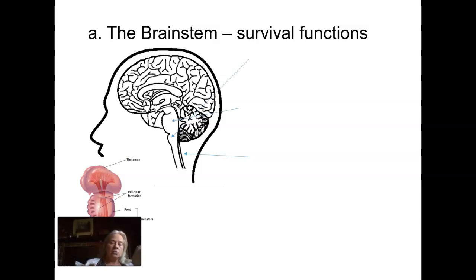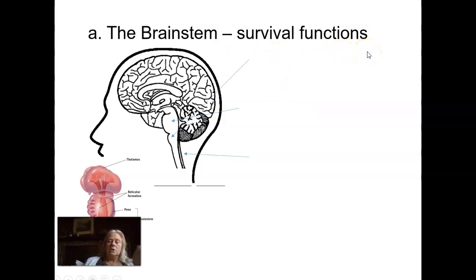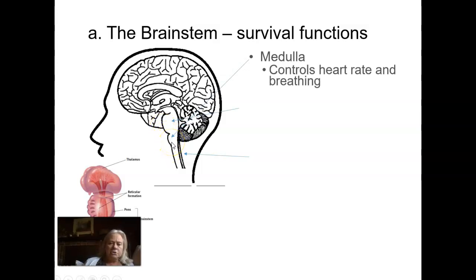I recommend going to your diagrams and finding the one that shows the brain stem, as we label and describe its parts. The brain stem itself is the stalk on which the larger part of the brain sits, and its primary function is survival. The first structure, the medulla, is the bulge right at the base, and it is absolutely critical for heart rate and breathing. If you have damage to the medulla, you're not likely to survive it.